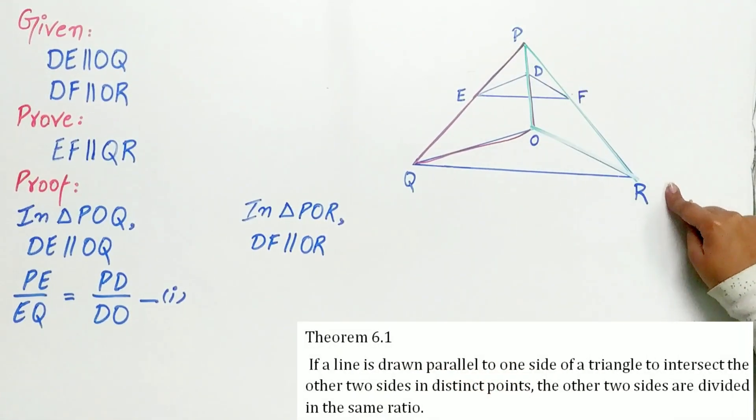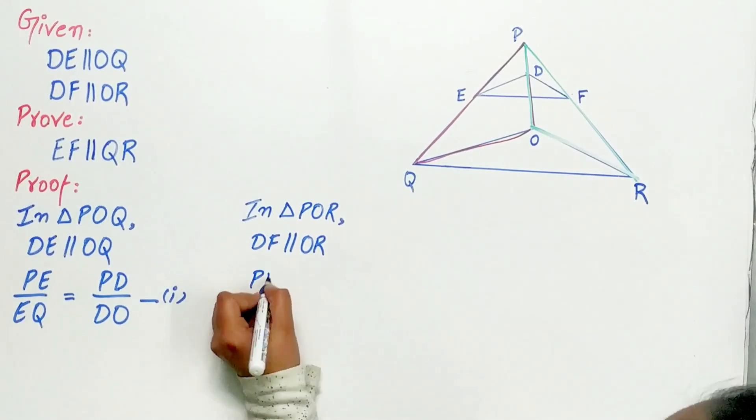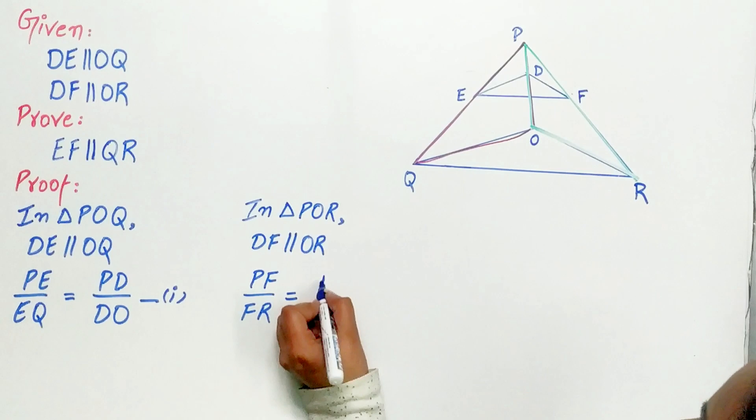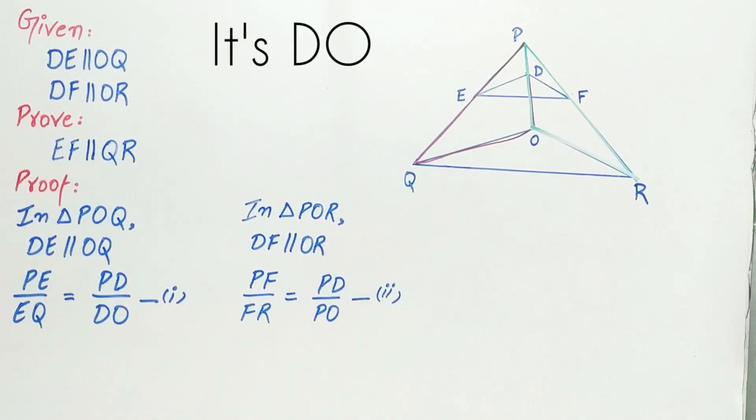That is, PF by FR is equal to PD by DO. Let's mark it as second.